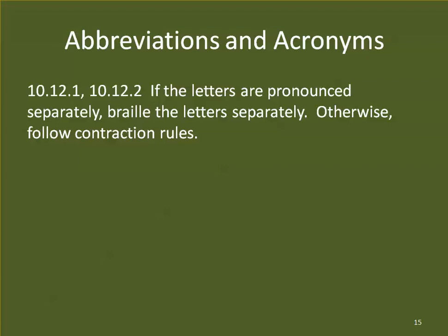Moving on to abbreviations and acronyms: if the letters are pronounced separately, we Braille the letters separately; otherwise we can use contractions as long as we follow contraction rules. So we would use I-T instead of X for 'information technology,' and U-S (not just U) to stand for the United States. For W-H-O (World Health Organization), we would not use the W-H contraction because that's not how we pronounce it.